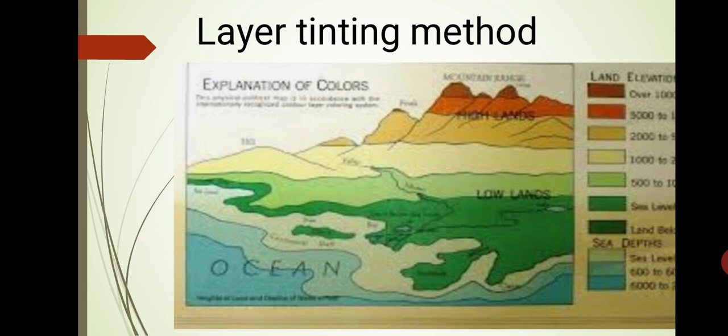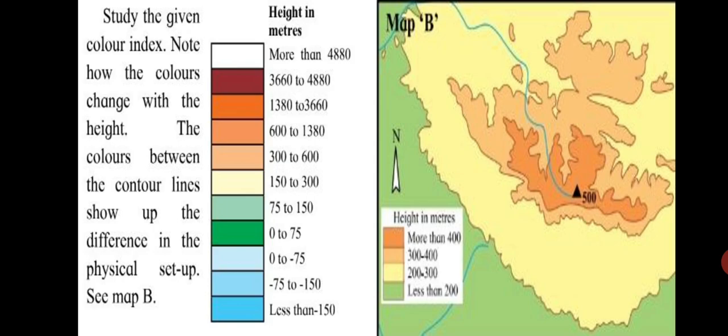For example, water bodies are colored blue. Whereas, the adjoining land is colored dark green. Land higher than that is colored a light green. Next, higher line is colored yellow and so on. Study the given color index. Note how the colors change with the height. The colors between the contour lines show up the difference in the physical setup.